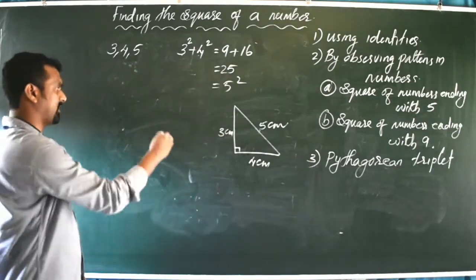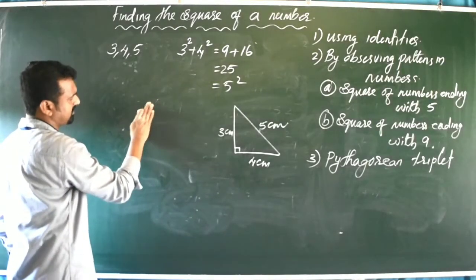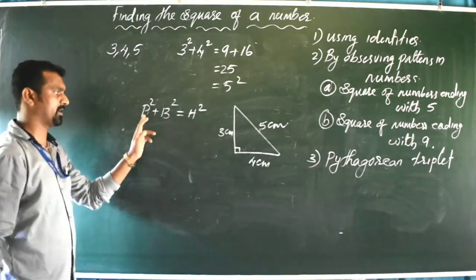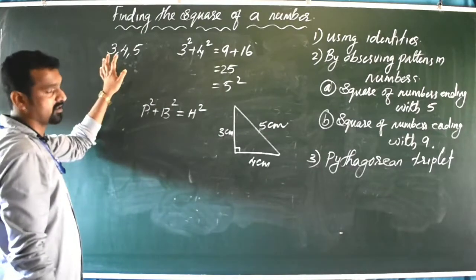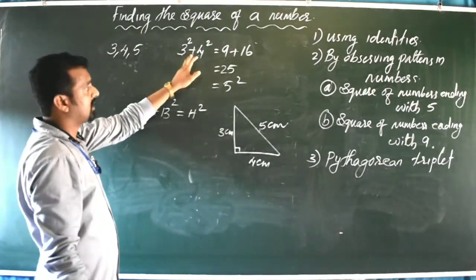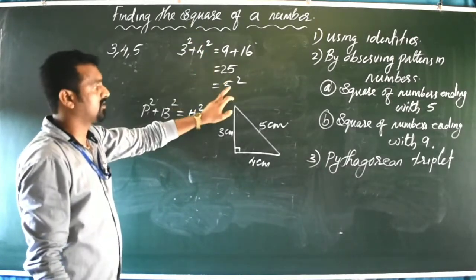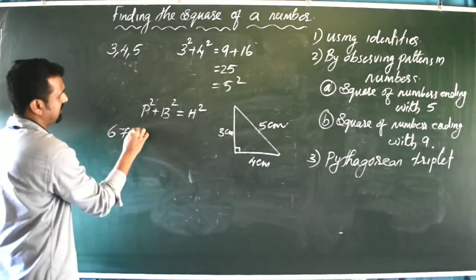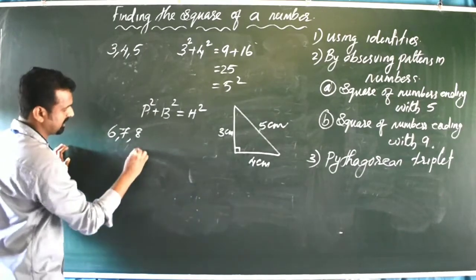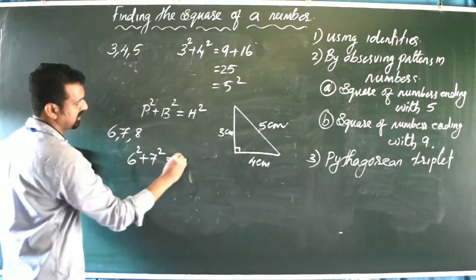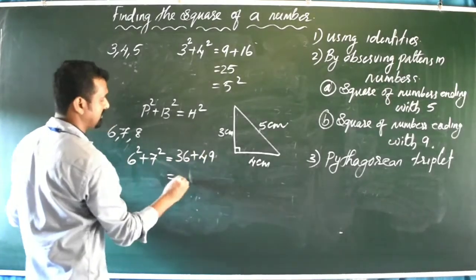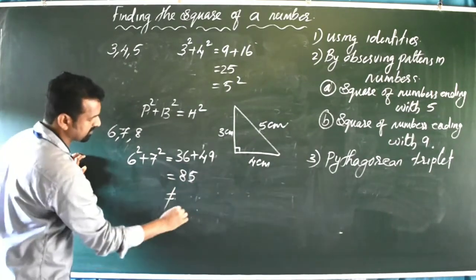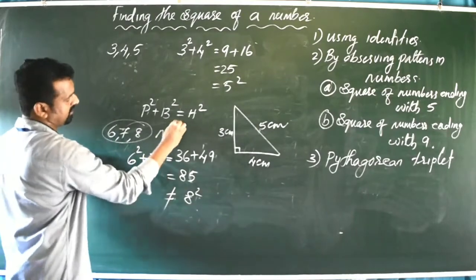This is also called the Pythagoras theorem: the sum of the squares of perpendicular and base equals the square of the hypotenuse. However, not all three numbers form a Pythagorean triplet. For example, 6, 7, 8 are not Pythagorean triplets because 6² + 7² = 36 + 49 = 85, which is not equal to 8² = 64.